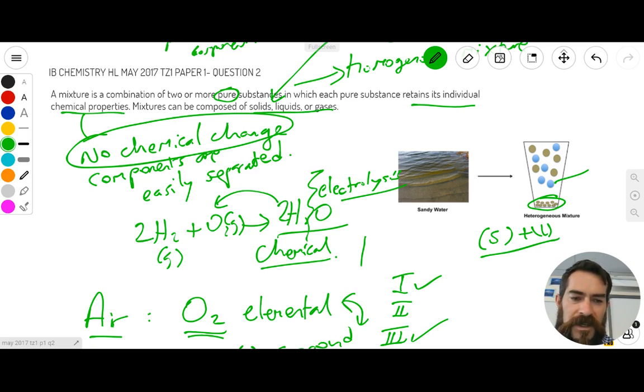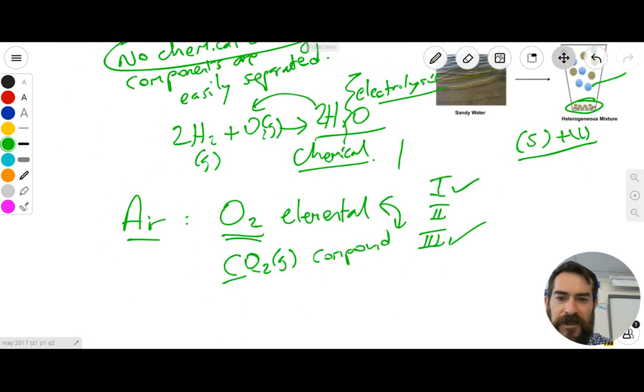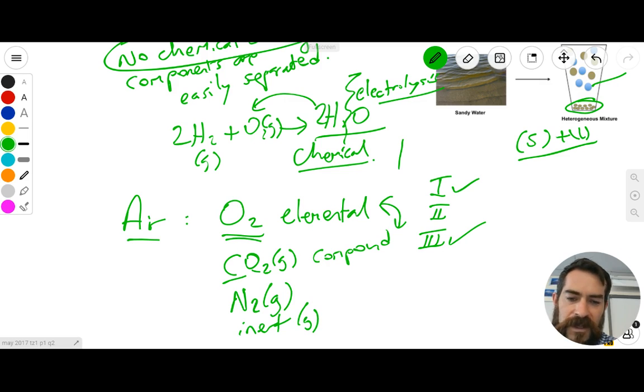Another example then, if we look back to our air example, within our air example we just had gas phases that we were considering. Of course you could have nitrogen gas being considered as well and the inert gases within air, but they're all in the same phase. So this would be an example of a homogeneous mixture.